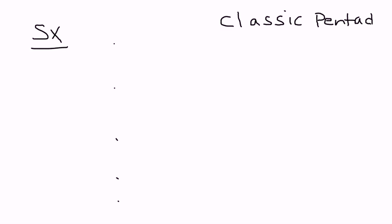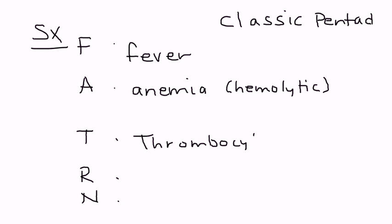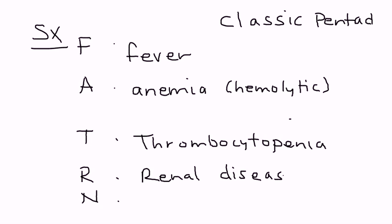There's a nice mnemonic: FAT RN. The F is for fever, the A is for anemia — in particular, it's a hemolytic anemia. The T is for thrombocytopenia, meaning low platelets. The R is for renal disease, renal failure. And the N is for neurologic abnormalities.